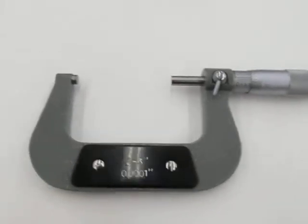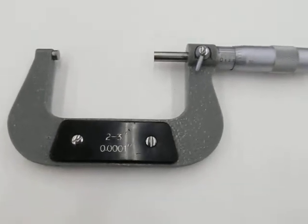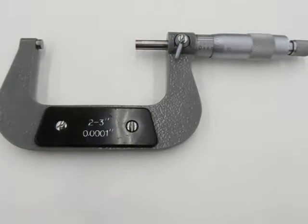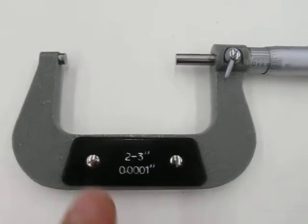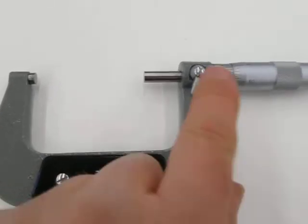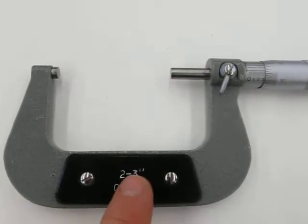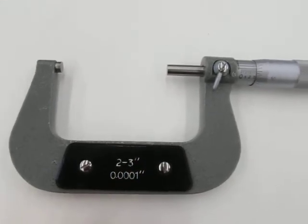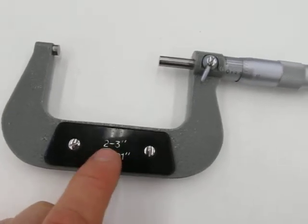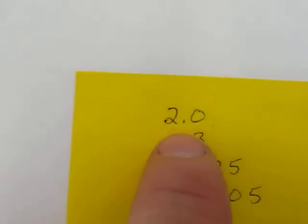I've already taken a measurement of my component and now I'm going to show you how I got the answer. First of all, I've already locked it after measuring. It's a two to three inch micrometer and my answer will always start with that first number. In this case it's a two, so there's my two point zero.